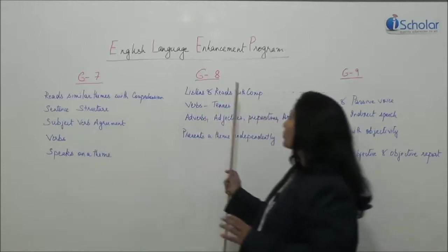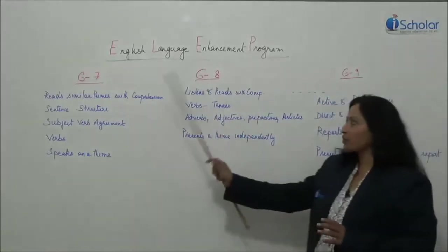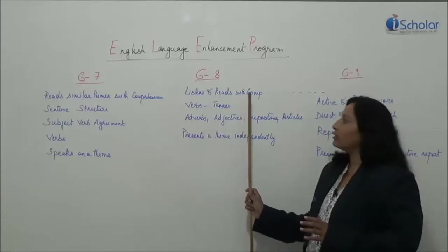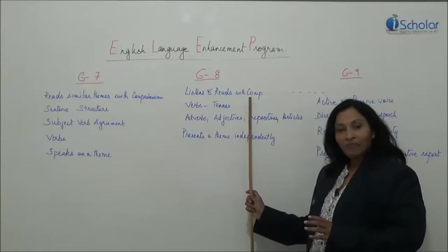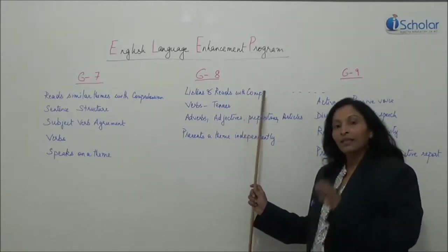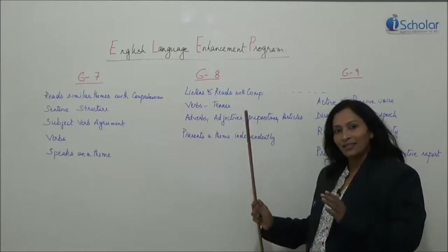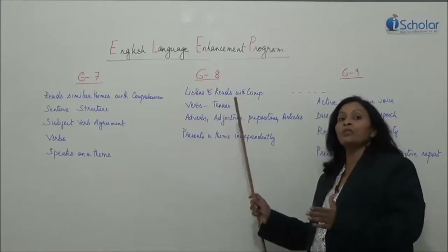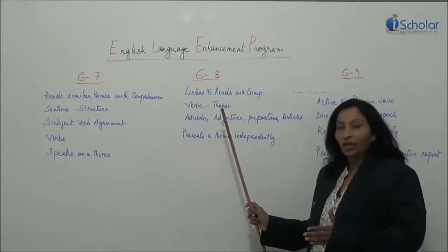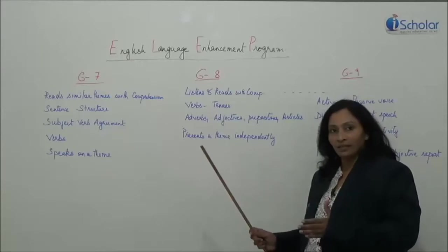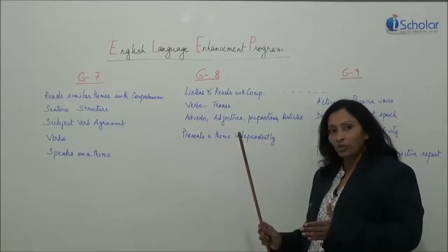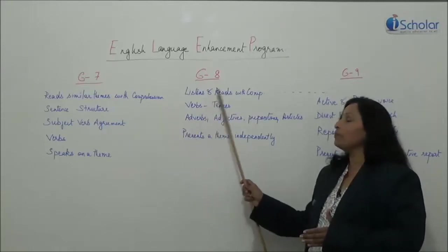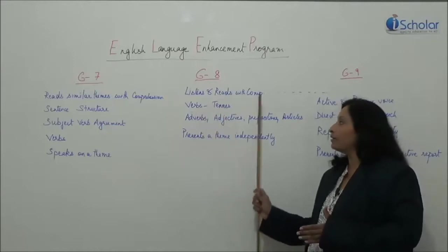Now let's move on to grade 8. Here again, the student will be able to listen and read things with comprehension. But here we will slowly bring in independent themes — themes that may not be necessarily connected to what they have read. It could be something as simple as a newspaper report or an article from a magazine which does not have anything to do with what they have read in their textbook. That means we are getting them to take interest in unfamiliar themes.